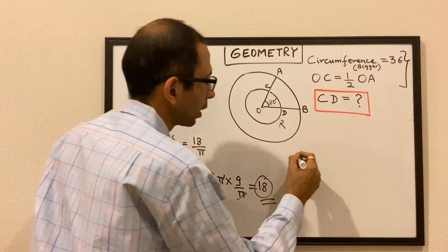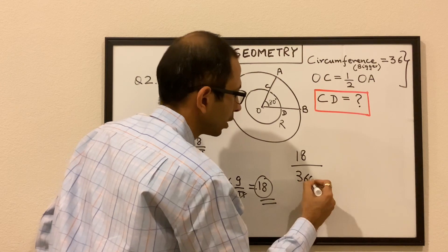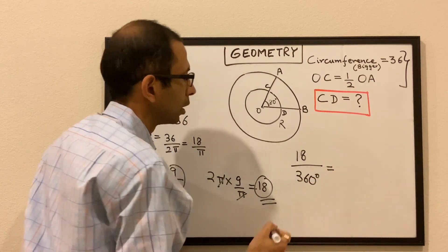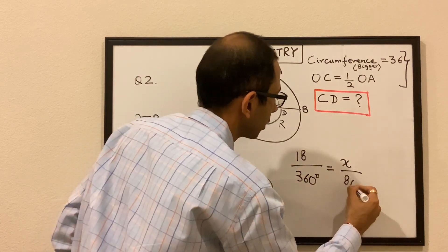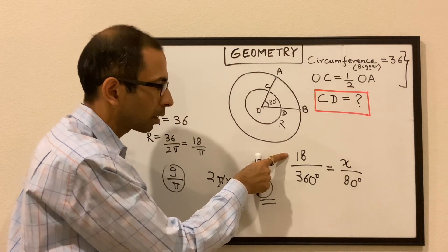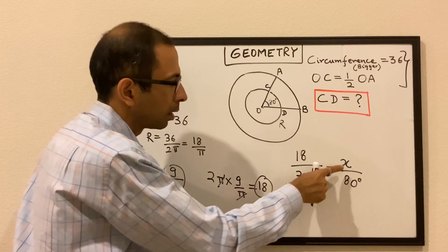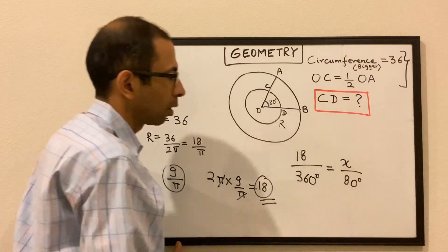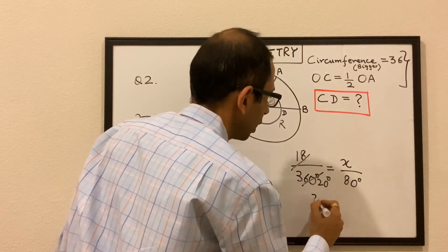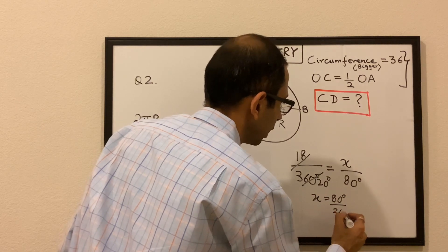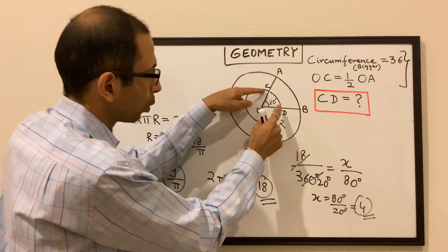So essentially we can write that the circumference, which is 18, divided by 360 degrees, is equal to this portion X divided by 80 degrees. So: full length over full angle equals partial length over partial angle. We can solve this to get the value of X. 18 times 20 is 360, so X equals 80 degrees over 20 degrees, or 4. Essentially the length of CD, or this portion of the arc, is 4.